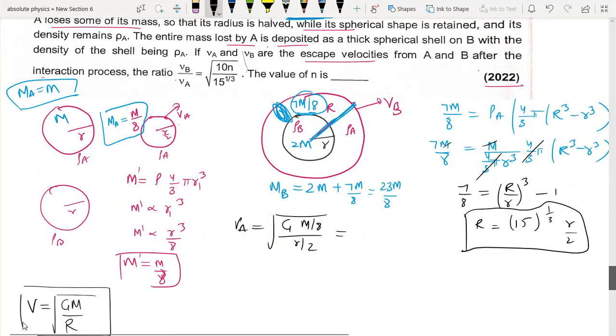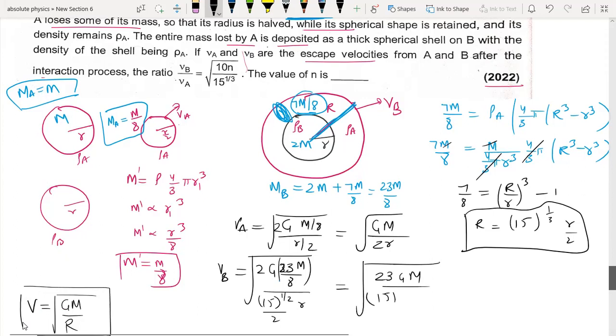VA is equal to √(2GM/r). For the new configuration: √(2G(23m/8)/(r/2)) which equals √(23GM/15r) × 2.